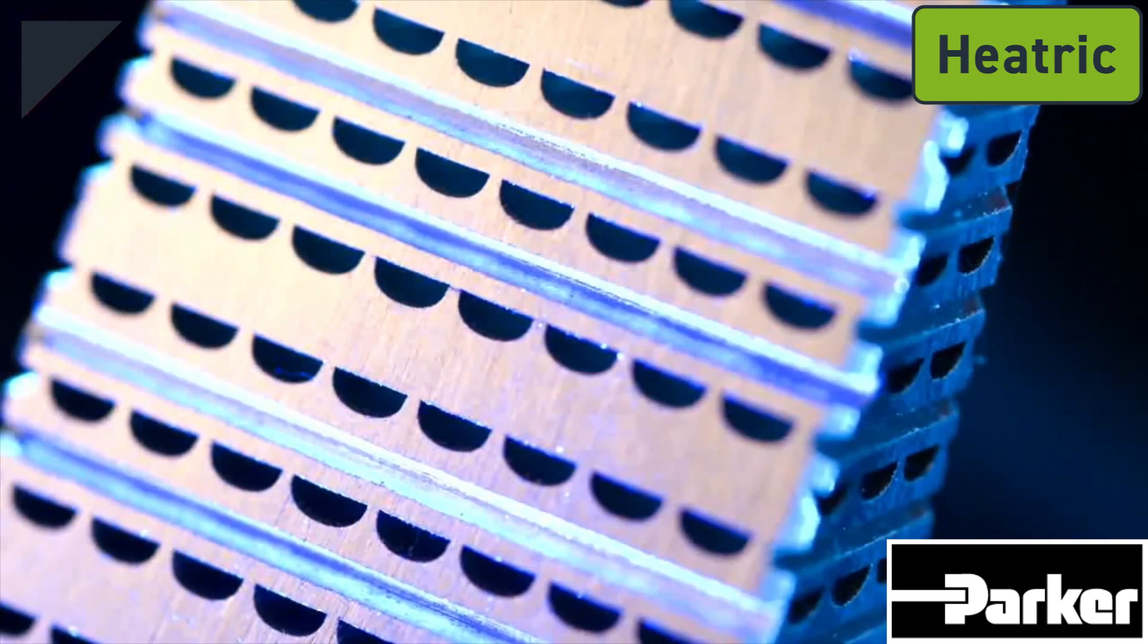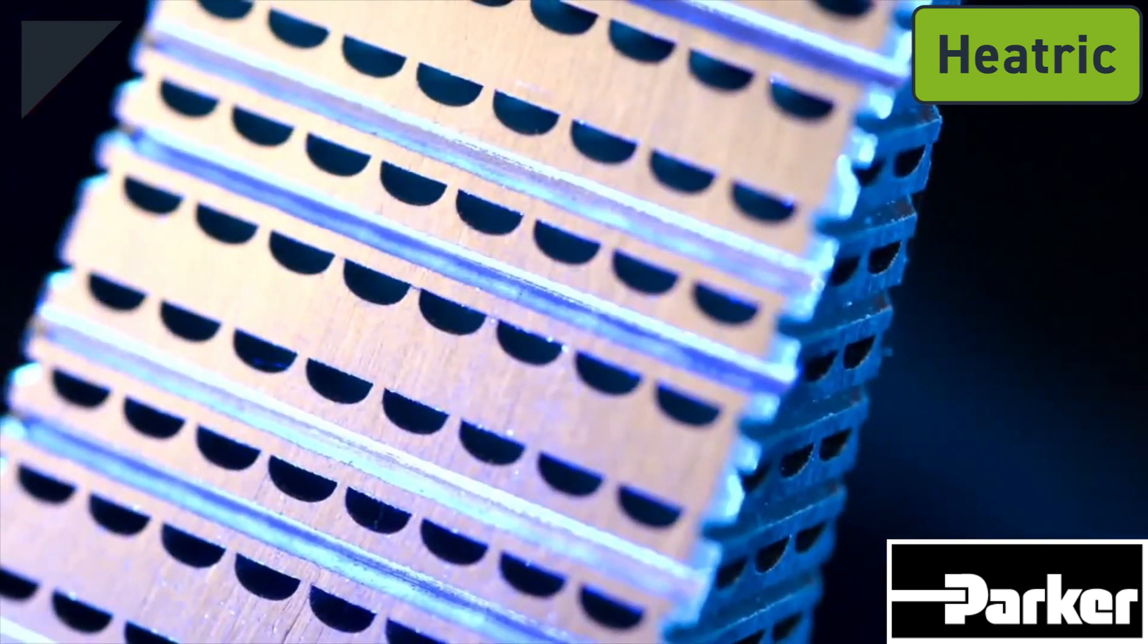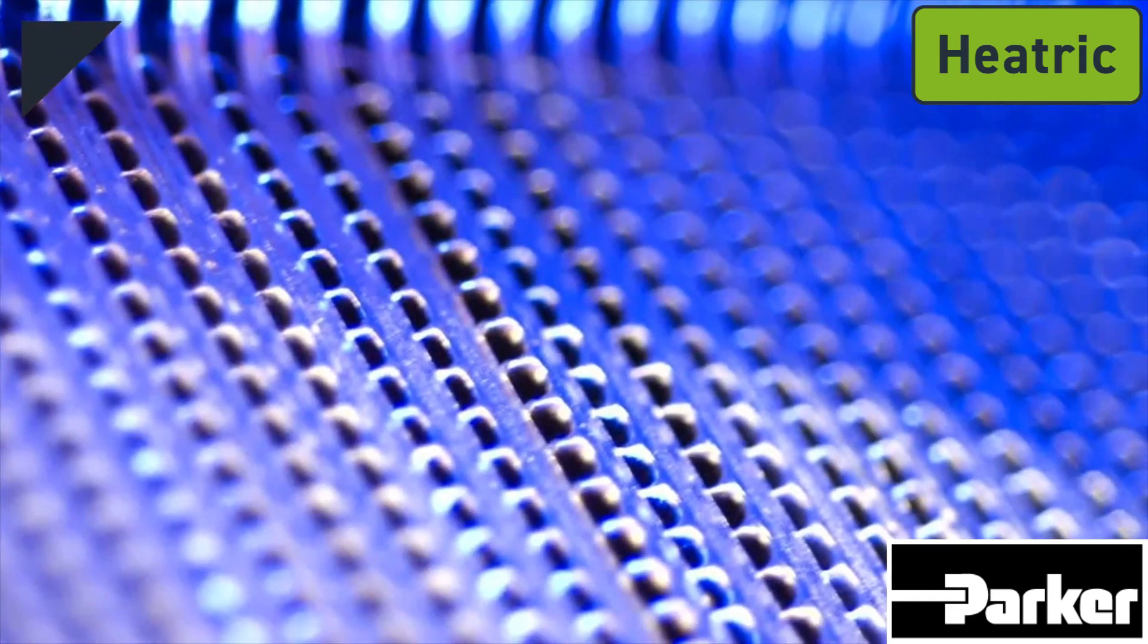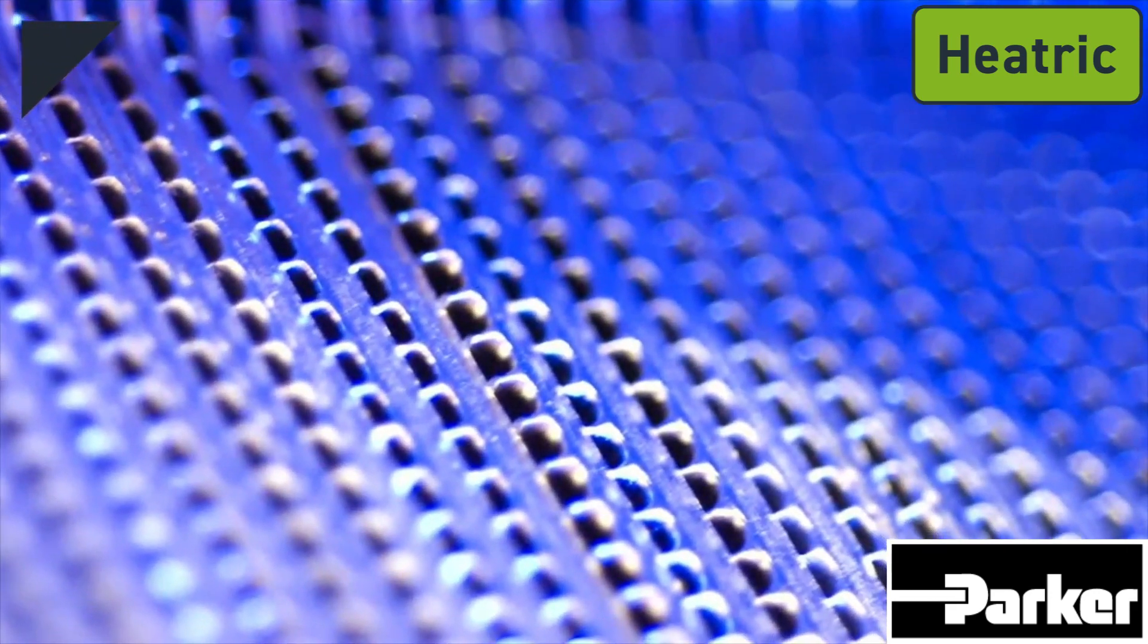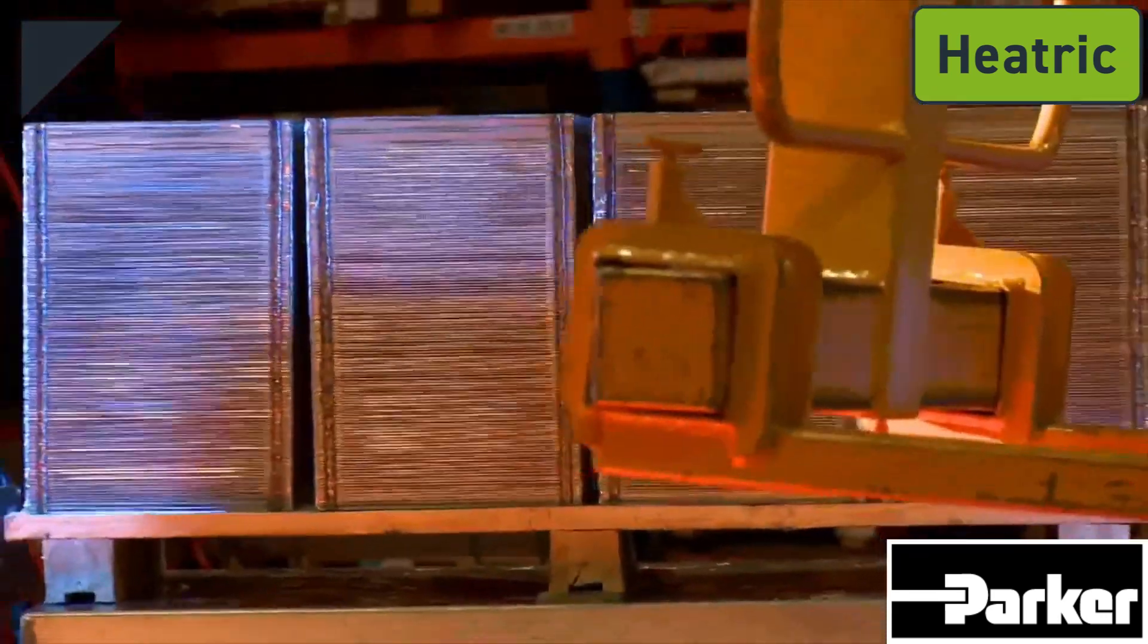The diffusion bonding process does not employ any braze, flux or gaskets in the construction of the heat exchanger core. This bonded core behaves as a single metal block with engineered holes running through it. It can then be machined and welded using conventional fabrication techniques.